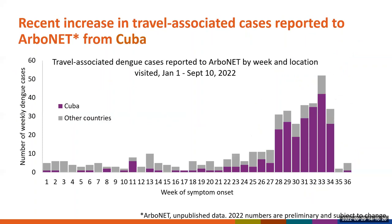In recent weeks, there has been an increase in travel-associated dengue cases in the United States. This figure shows the number of travel-associated dengue cases reported to ArboNET, the National Arboviral Surveillance System, by week of symptom onset. Public health officials found that the majority of recent cases reported travel to Cuba. Clinicians should have a high level of suspicion for dengue among febrile patients reporting recent travel to Cuba or the Caribbean region.